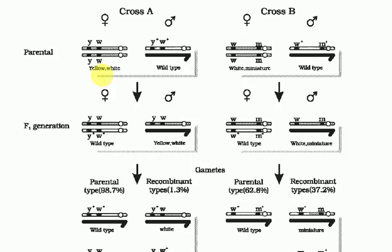Since y and w are close together, linkage is more in Cross A, while w and m are far apart so linkage is less in Cross B. Linkage and recombination are inversely proportional — more linkage means less recombination, and less linkage means more recombination. So Cross A will have a very low frequency of recombination.